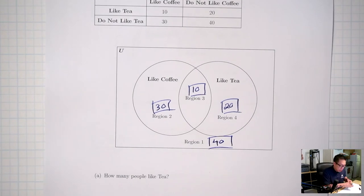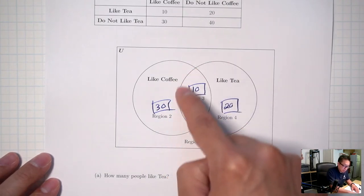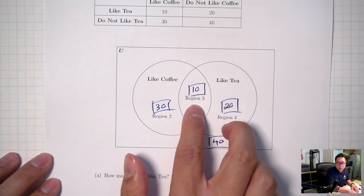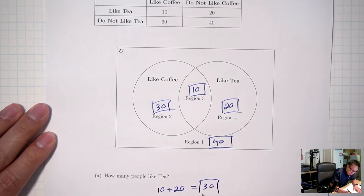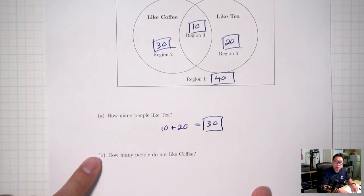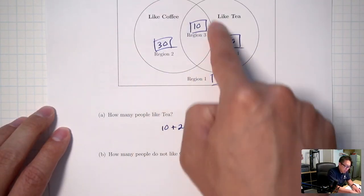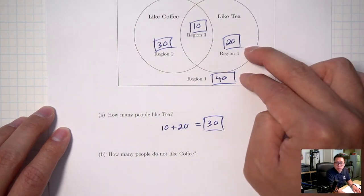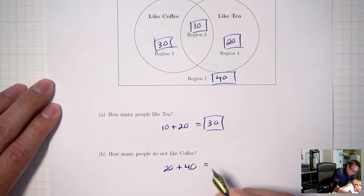Answering questions: how many people like tea? Liking tea means inside tea, which is regions 3 and 4 — that's 10 and 20, so 10 plus 20 is 30. How many people do not like coffee? Outside coffee would be regions 4 and 1 — that's 20 plus 40, which is 60.